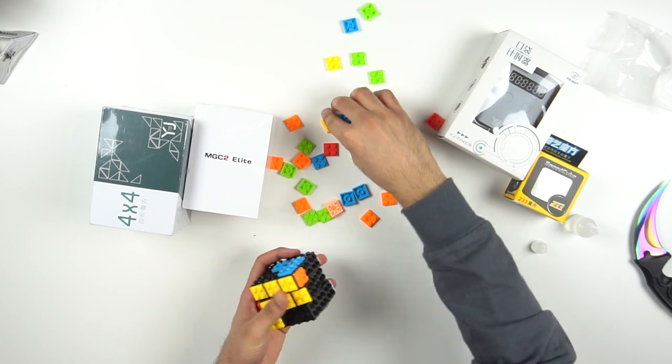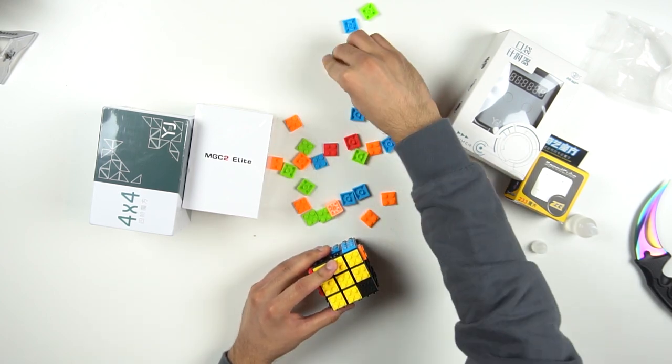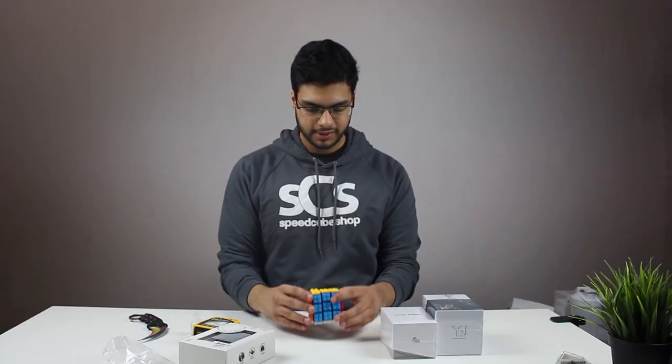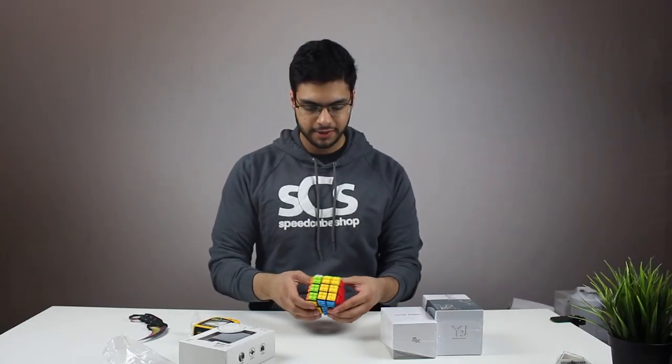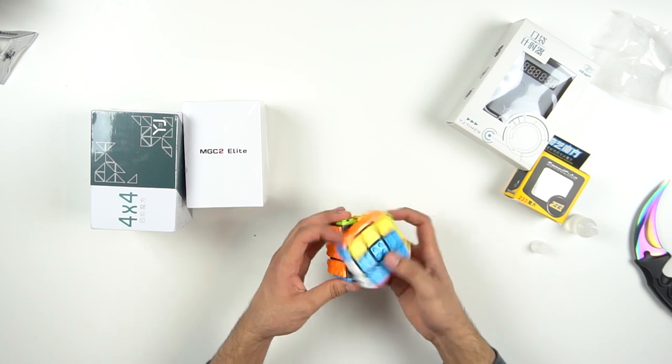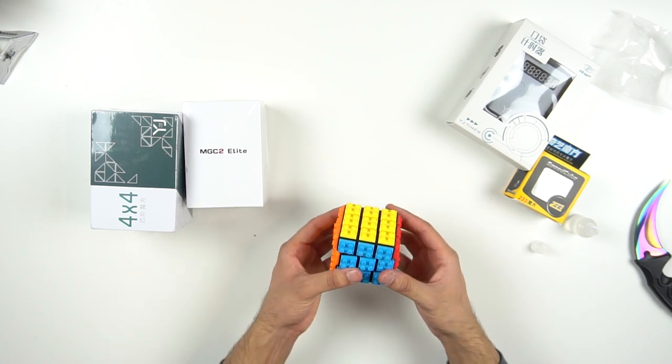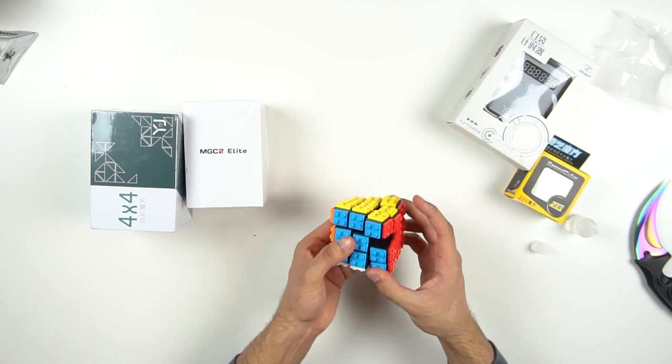But anyway, let's continue to sticker this up. Alright, finally it's all tiled and ready to go. After lubing it, it turns really nicely. The only thing is, it doesn't reverse corner cut, like whatsoever. It's like a Rubik's brand cube at that point.